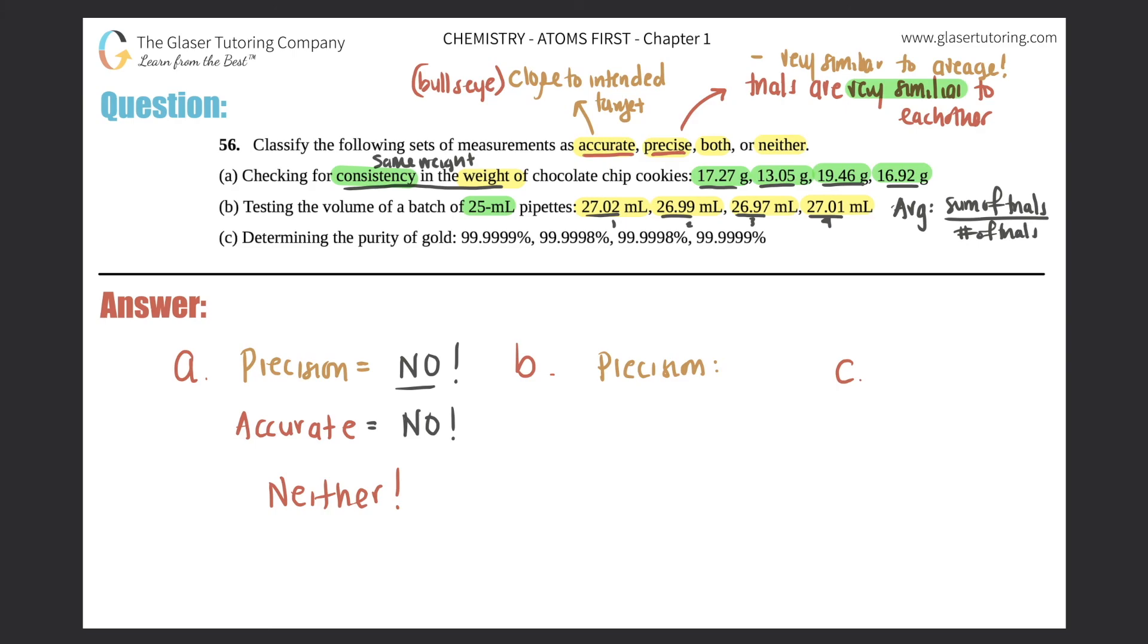So I'm going to say 27.02 plus 26.99 plus 26.97 plus 27.01, and I divide by four because there's four trials. And I get, if I do my correct sig figs, I get an average of actually 27.00 mL with rounding.